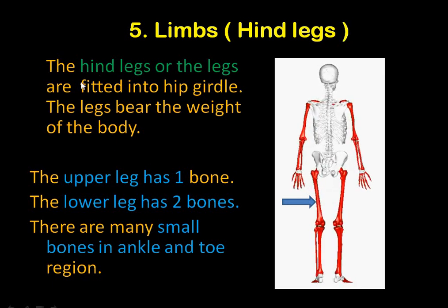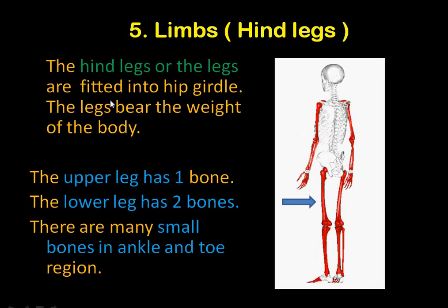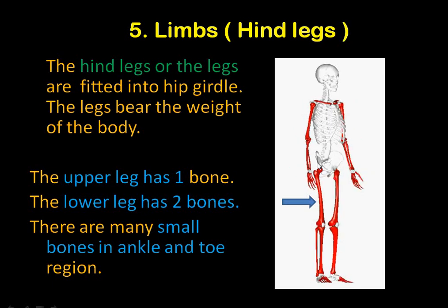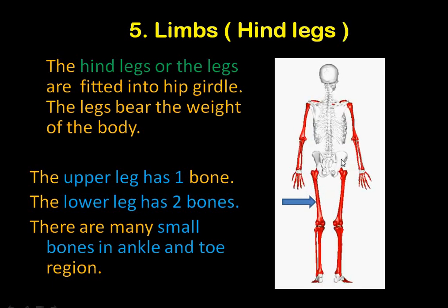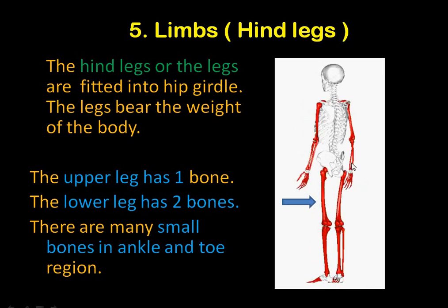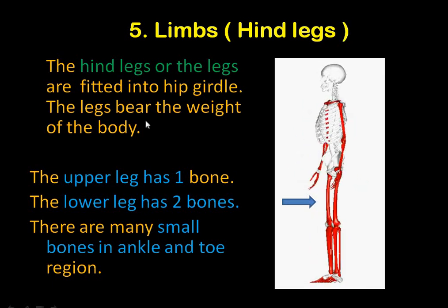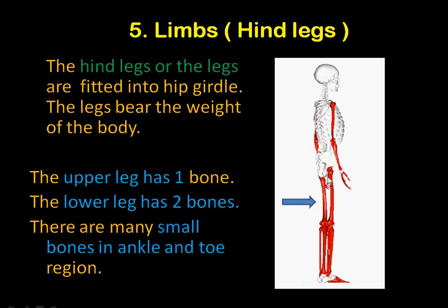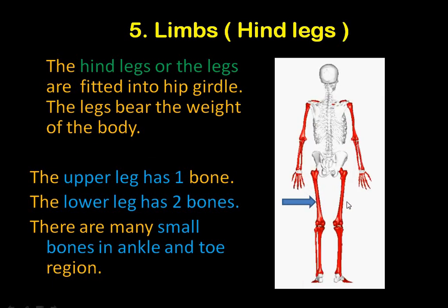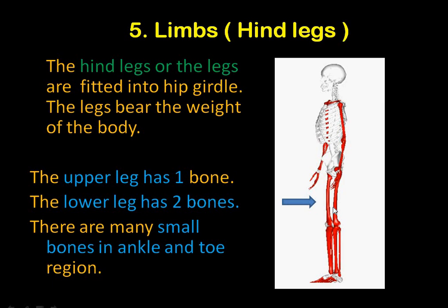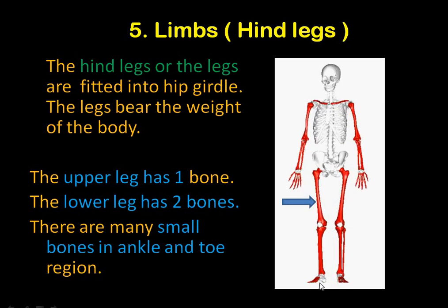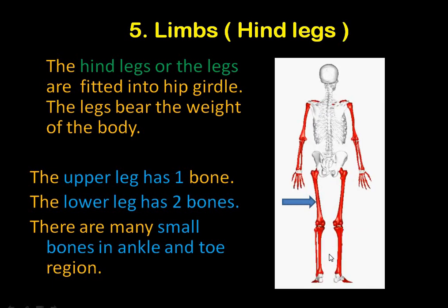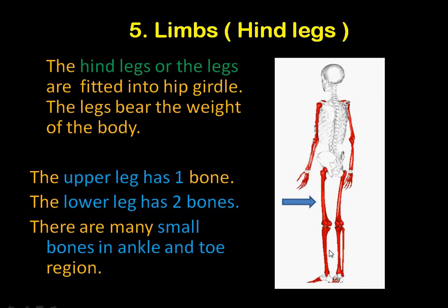Similarly, in your legs, your legs are fitted into the hip girdle. The hip girdle bears the legs, and the legs bear the weight of the body. In your upper leg, there is one bone. In the lower leg, again, we have two bones.